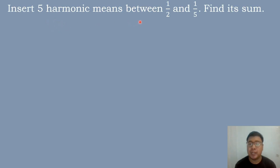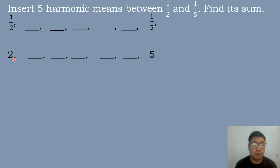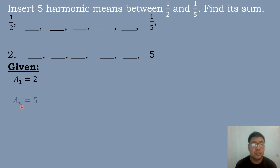Next example: Insert 5 harmonic means between 1/2 and 1/5, then find its sum. We write 1/2 and 1/5 and insert 5 blanks between those two numbers. Then we get the reciprocal of 1/2, which is 2, and the reciprocal of 1/5, which is 5. We identify the given: A sub 1 = 2, A sub n = 5 (the last term).